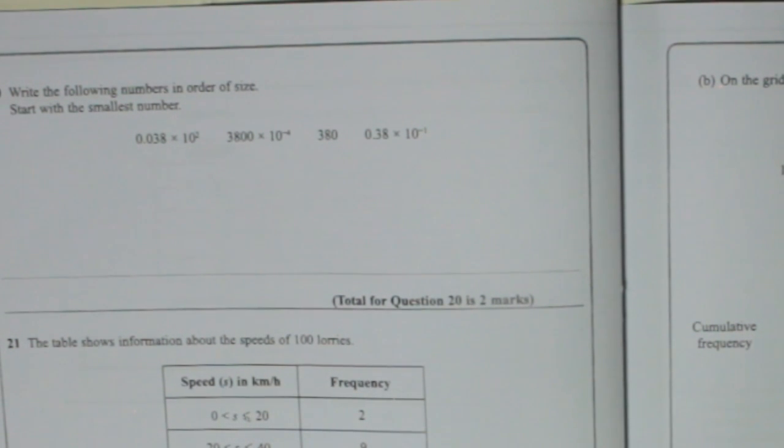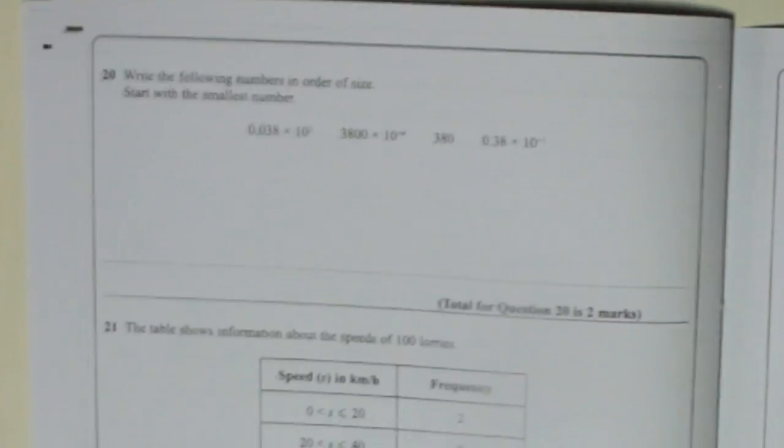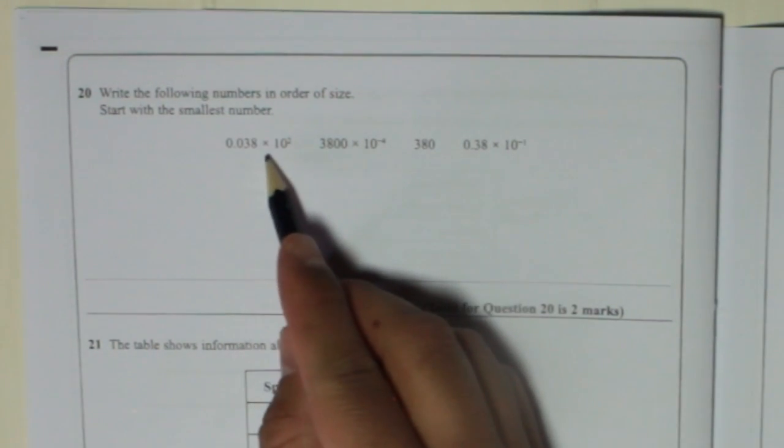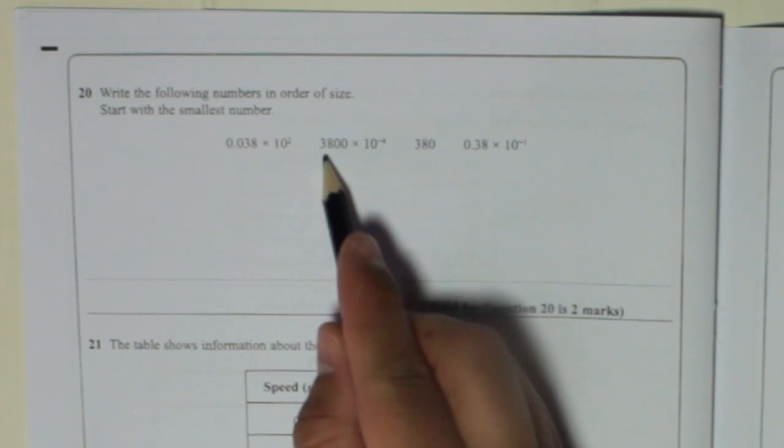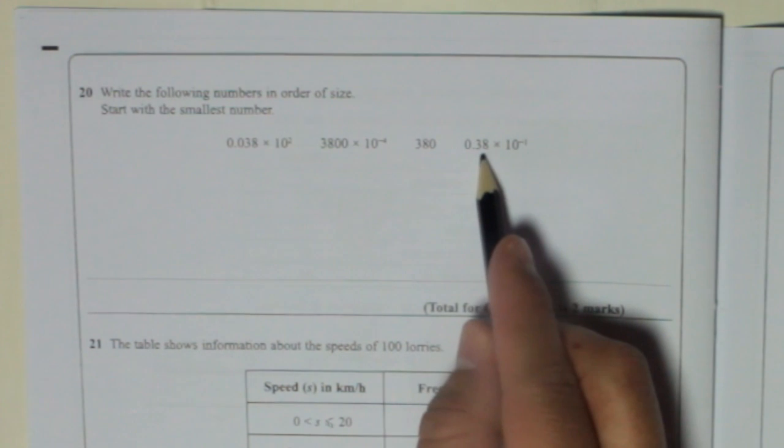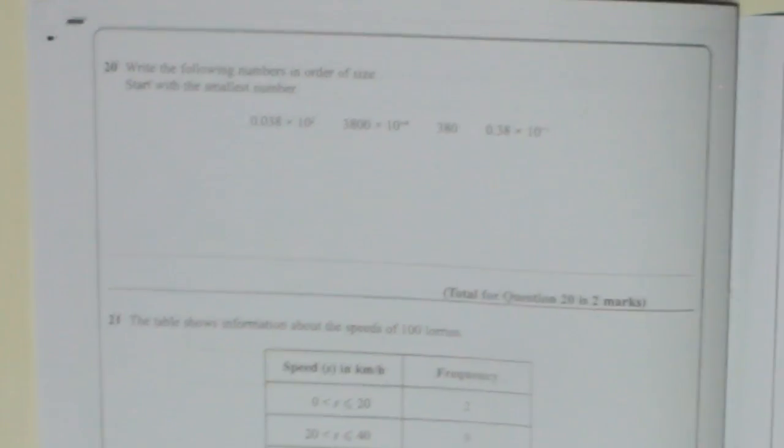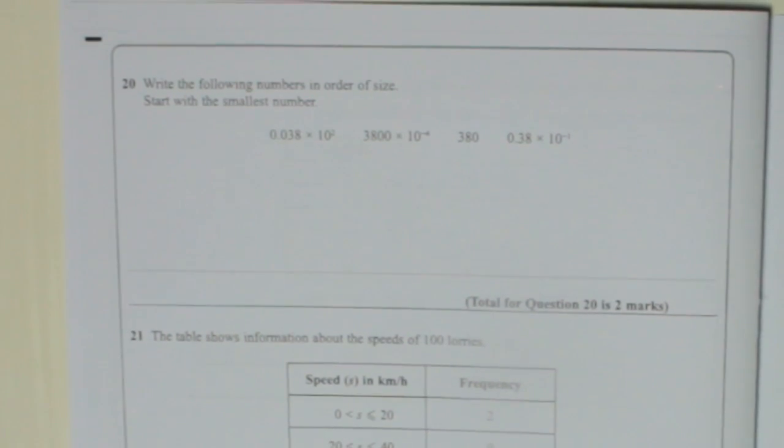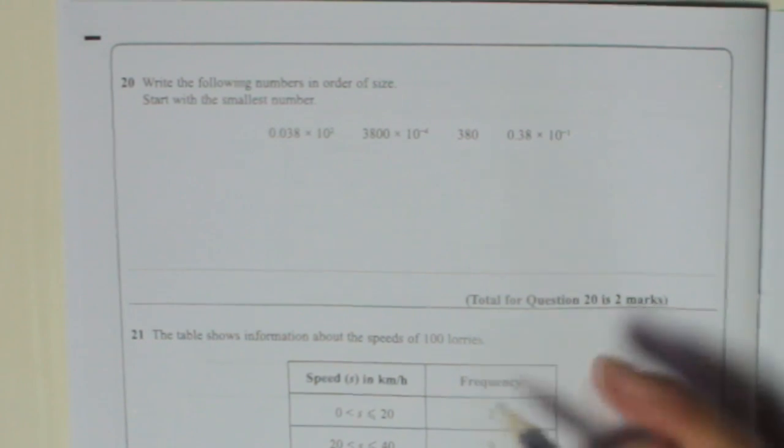Question 20. Write the following numbers in order of size, start with the smallest number. You've got 0.038 times 10 to the power of 2, 3800 times 10 to the minus 4, 380, and 0.38 times 10 to the minus 1. What I'm going to do is underneath each number I'm going to write out what each number is in real terms.